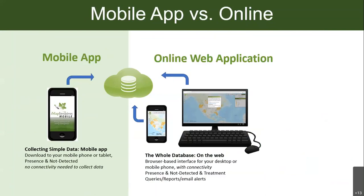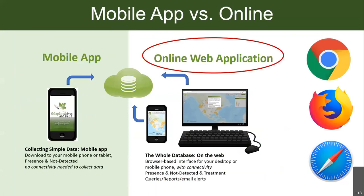We also have a mobile app. Since we rely heavily on community and professional scientists recording invasive species data in the field, we created this mobile app for simple data collection. You don't need internet while you're using it — you just need it to set it up and upload the data. You can use this app out in the field even without an internet connection. We'll start with the online web application because that's how you set up your account. You should use Chrome or Firefox — on iPhone your default might be Safari, which also works, but browsers like Microsoft Edge or Explorer don't work as well.